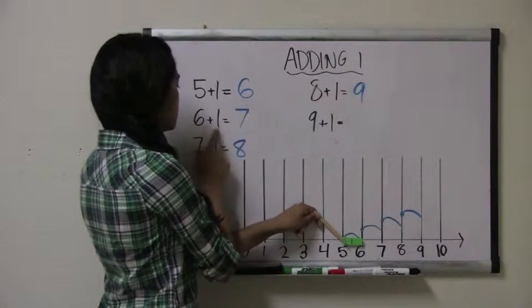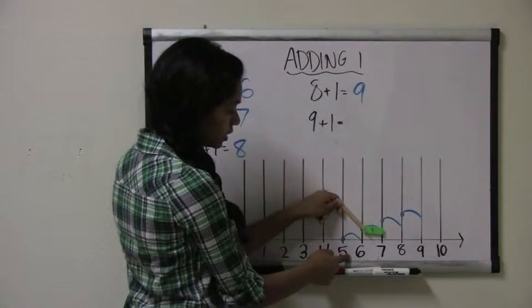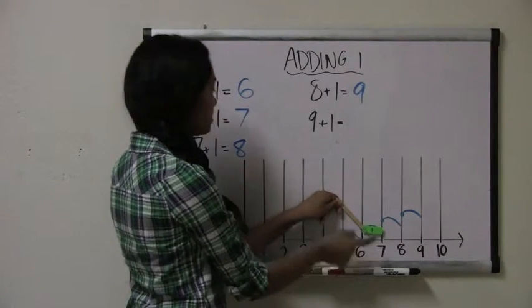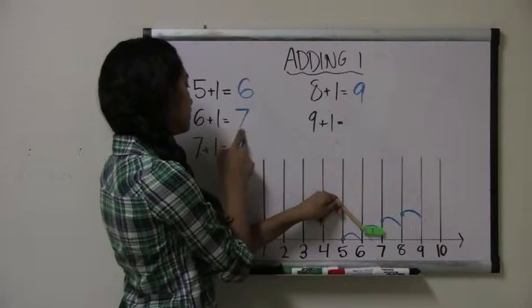The next one is 6 plus 1. So we start with the number 6, we jump one spot to get to the number 7. So 6 plus 1 equals 7.